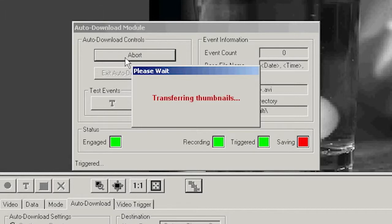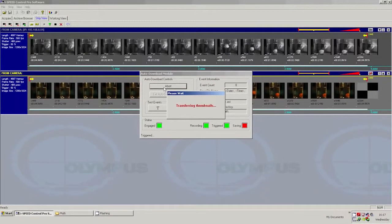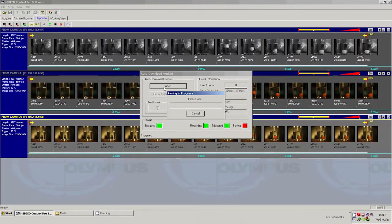OK, the software tells me that the recording has been completed, the cameras have triggered and we're now transferring thumbnails. As you can see these are coming into the strip view and the software will now save the videos that we've just got into another folder.